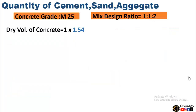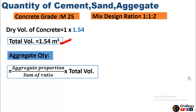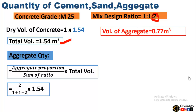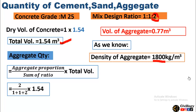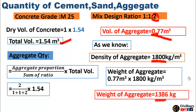For aggregate, the total dry volume is again 1.54 cubic meters. Using the same formula with the aggregate proportion of 2 divided by the sum of ratio, we get 0.77 cubic meters. To convert this into weight, the density of aggregate is 1800 kg per cubic meter. Multiplying this volume by the density, the weight of aggregate comes out to be 1386 kilograms.